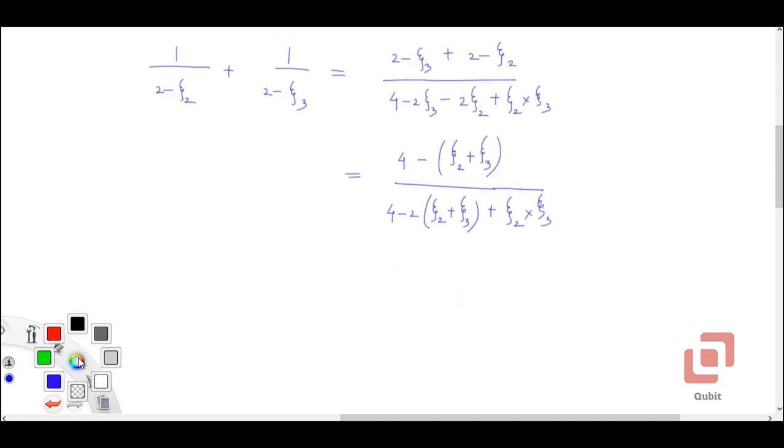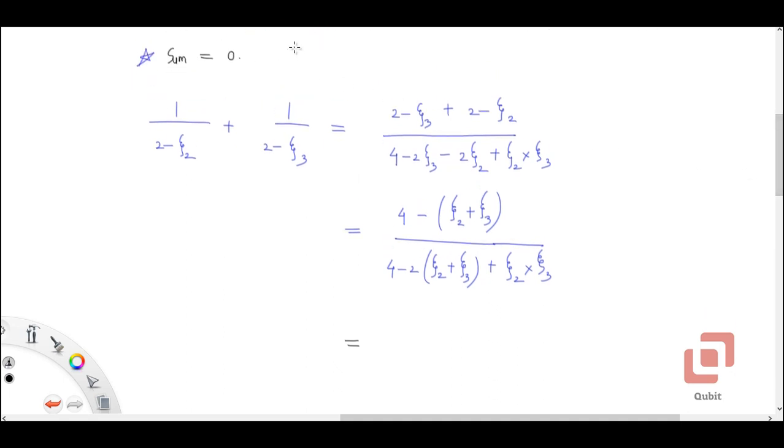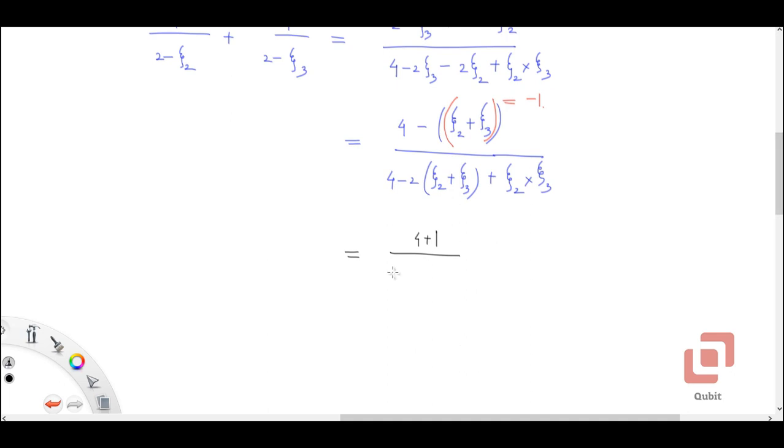And now, we will use this fact that the sum of the complex roots is 0. Now, if the sum is 0, then this sum here zeta_2 + zeta_3 must be equal to minus 1. So let's substitute this sum as minus 1. The numerator will be 4 - (-1) or 4 + 1. And the denominator will now be equal to 4 - 2 × (-1) plus the product of the other two roots.